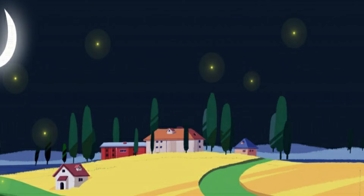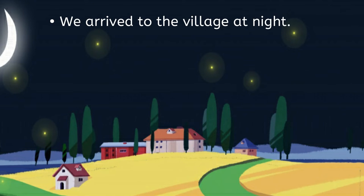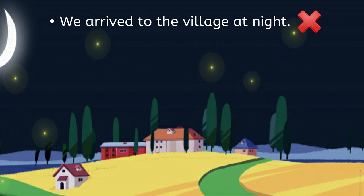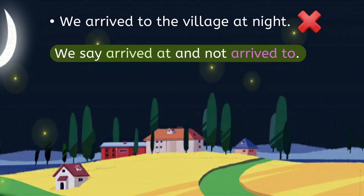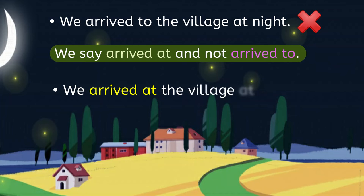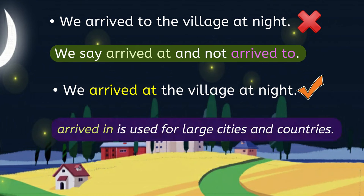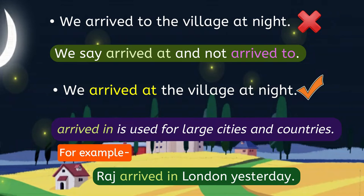Let us look at this one: 'We arrived to the village at night.' No, this is incorrect. We say 'arrived at' and not 'arrived to.' Now repeat the correct sentence after me. Please note: 'arrive in' is used for large cities and countries — for example, Raj arrived in London yesterday.